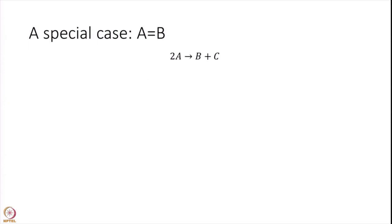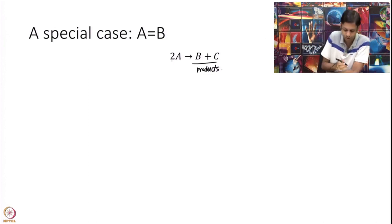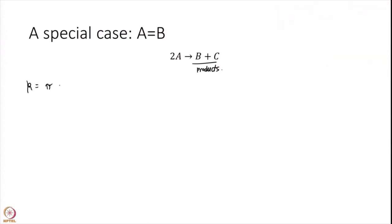The next thing I want to compare is a somewhat special case if A is equal to B. So I have 2A going to some products. And so A is reacting with itself. You might be a bit surprised perhaps, but actually we have seen such an example when we were discussing the isomerization of cyclohexane to propene. Then we discussed this 2A.